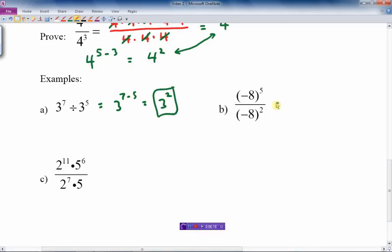Next one, negative 8 to the 5th. Now, the base is the bracket, which is negative 8. So negative 8, leave it in a bracket. Do not remove the bracket. 5 minus 2. So 5 minus 2, in a bracket again, cubed. So there's our answer.